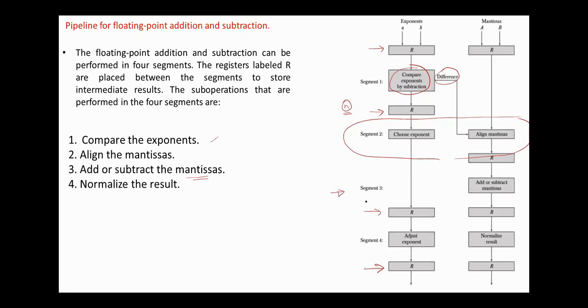In segment 3, the mantissas are added or subtracted. In segment 4, the sum or difference should be adjusted by normalizing the result so that it has a fraction with a non-zero first digit. This is done by shifting right and incrementing the exponent by 1.